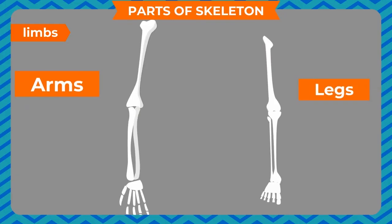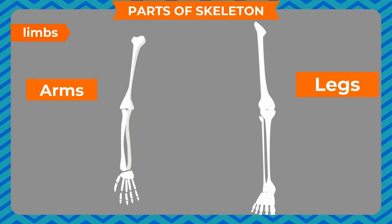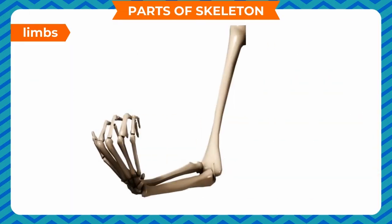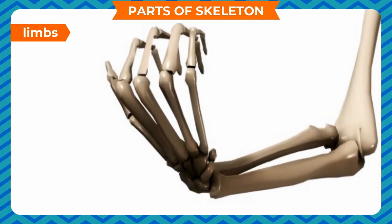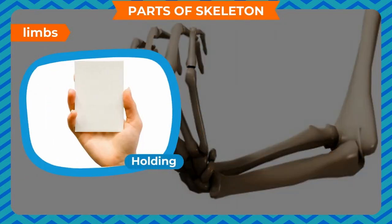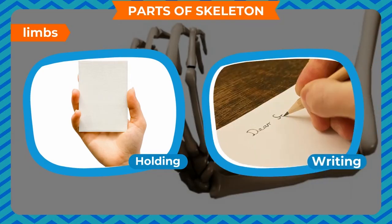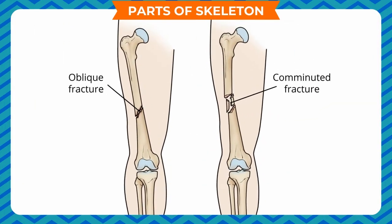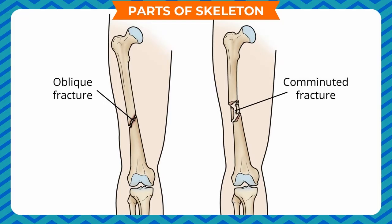The bones of the legs are stronger than those of the arms. Limbs have a number of small bones joined together at the wrist, which facilitates the movement of our hands and helps us in activities like holding, writing, etc. Legs also have 30 bones each. The longest bone of our body, the femur, is present in our legs. Leg bones support the weight of the entire body.